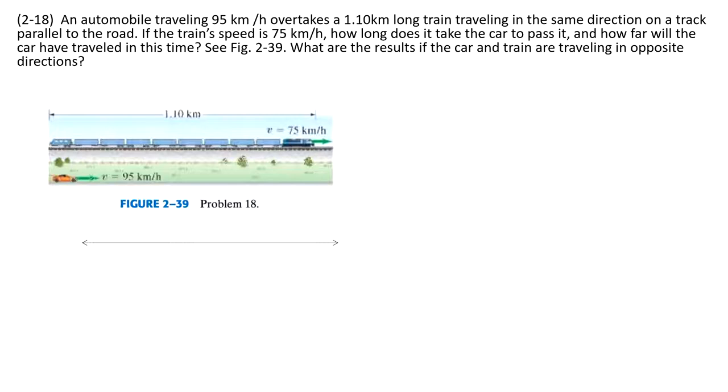So first thing, for an easy way to solve the problem, I suggest you draw a picture. So this is the road. And then we consider there is a train, and we must consider the length of the train. So we just draw it there. The length is 1.1 km. And finally it reaches the position there.